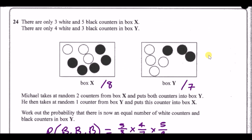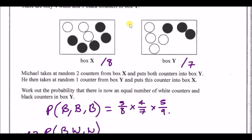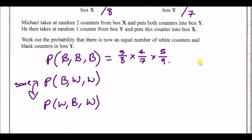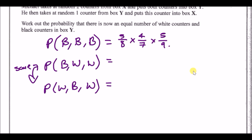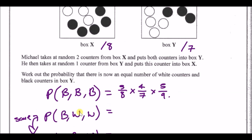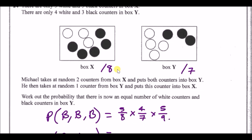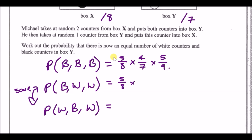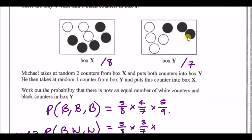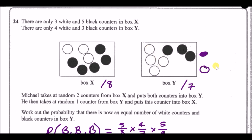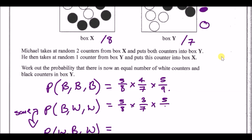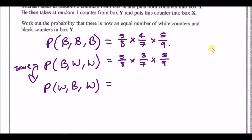Taking two whites would give box Y six whites — no way to make them equal — so that combination is impossible. These are all the valid scenarios. For the black-then-white case: probability is 5/8 × 3/7, and then you choose a white from box Y which now has nine counters, giving a 5/9 chance.